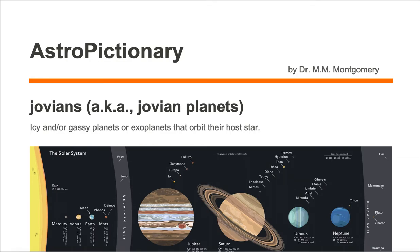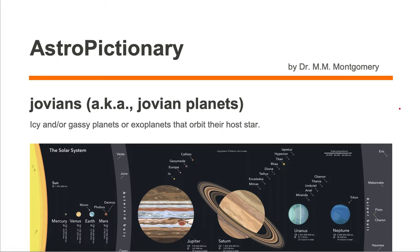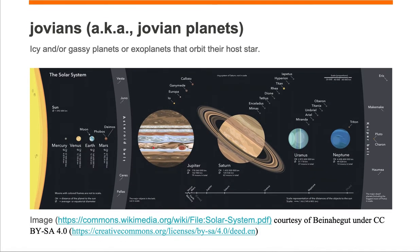Jovians, also known as Jovian planets, are icy or gassy planets or exoplanets that orbit their host star. For example, let's look at the solar system. The outer solar system consists of Jupiter, Saturn, Uranus, and Neptune, and these four objects are known as Jovian planets or Jovians. These four objects are icy and/or gassy, and they orbit their host star, which is our Sun.